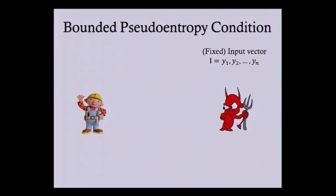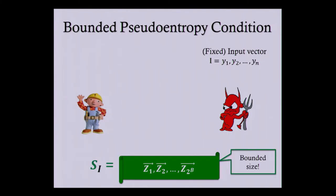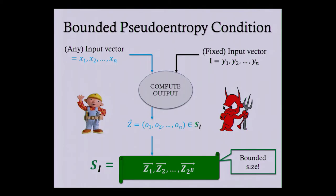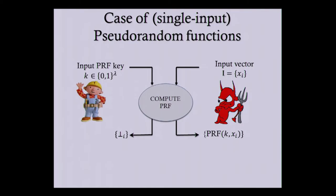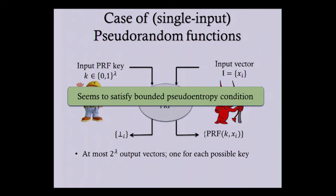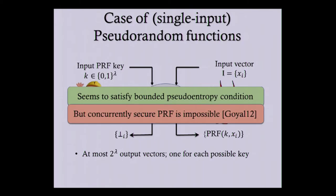More precisely, for the adversary's input vector I, there exists a fixed set S_I of bounded size such that no matter what the honest party input vector is, the corresponding output will lie in this set — for all possible honest party input vectors. However, this alone is not sufficient. Consider pseudo-random functions: the honest party holds a PRF key K and the adversary queries the PRF on inputs of its choice. Since the key is lambda bits, there are at most 2^lambda possible output vectors, so this seems to satisfy the condition — but this functionality is impossible to realize in the plain model.